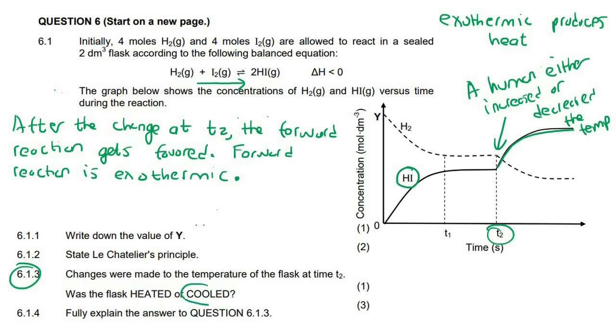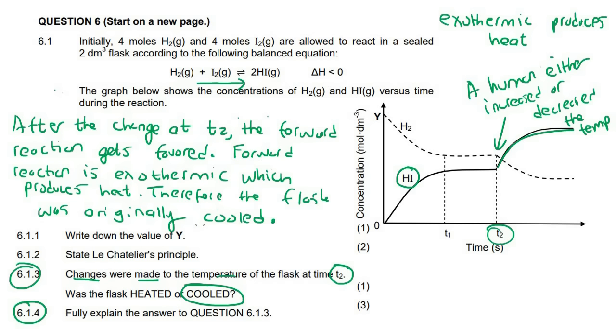So the answer for this first question is actually going to be cooled. Some learners will say heated because they can see that there's an exothermic. But that's not what the change was originally. They want to know what changes were made to the flask at T2. They're not asking what happened to the changes over here. They want to know what happened there. And then because of that, we can see what the system did in the response to the change. So this next question says, fully explain the answer. So we can say after the change at T2, the forward reaction gets favored. The forward reaction is exothermic, which produces heat. So then we can say, therefore, the system, or the flask, we can say the flask, was originally cooled. Because as I said, a lot of learners, they're like, oh look, exothermic, it's making it hot, so the system was heated. No, the system is only being heated after the original change, which took place over there.